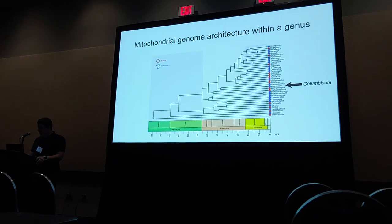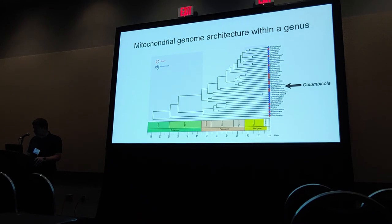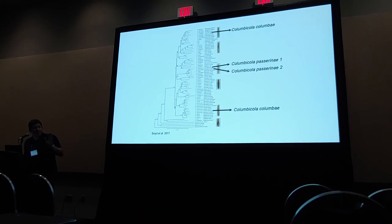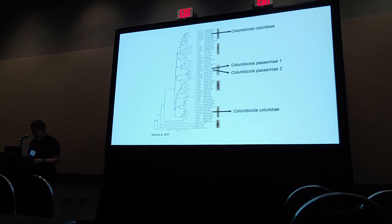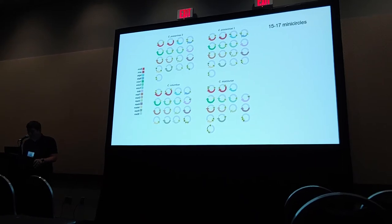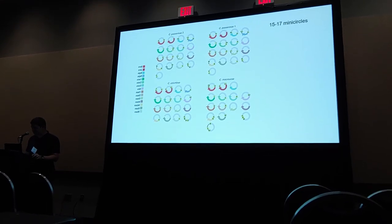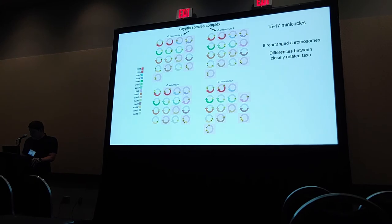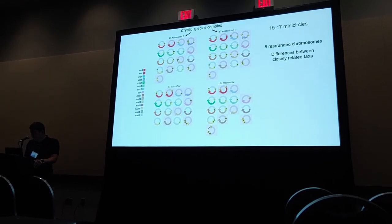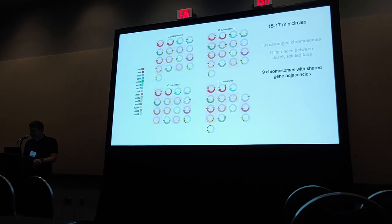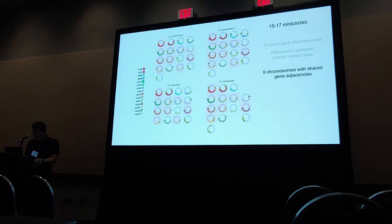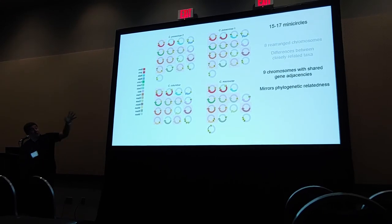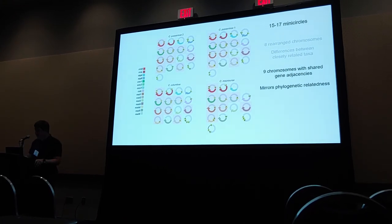The last thing I want to do is look within the genus Columbicola, which is where we began. Using four different species representing the three major clades of the genus, including two cryptic taxa, we found fragments in all of them — between 15 and 17 mini-circles. Missing ones are likely present but difficult to find. There are eight rearranged chromosomes, with tRNAs moving around even between closely related taxa. That being said, there are nine chromosomes with shared gene adjacencies, and there seems to be a mirror of phylogenetic relatedness: the two cryptic taxa tend to be more similar to each other than either is to the more distantly related species.